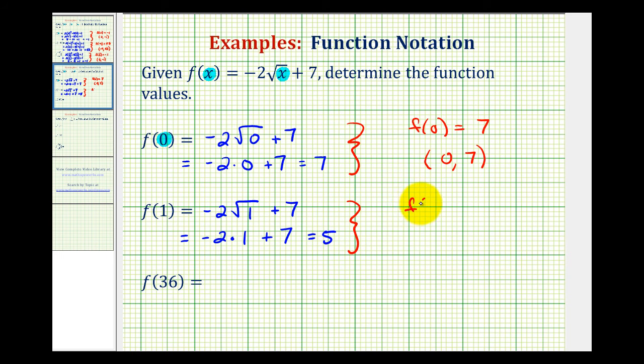So here, f of 1 is equal to 5. So when the input is 1, the function value is 5. Graphically, this represents the point with an x-coordinate of 1 and a y-coordinate of 5. So this point would be on the graph of the function.